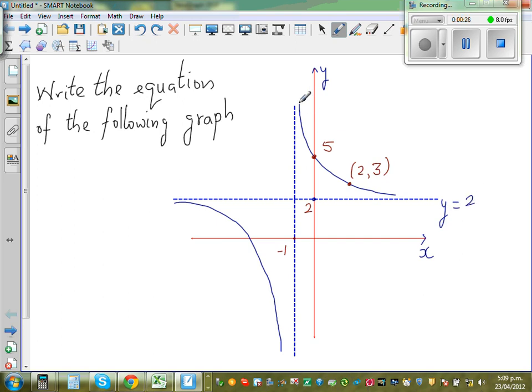And this line is passing through x is equal to negative 1. So this line can be called x is equal to negative 1.